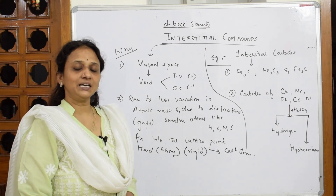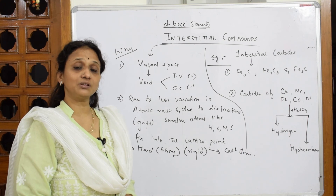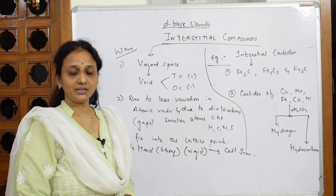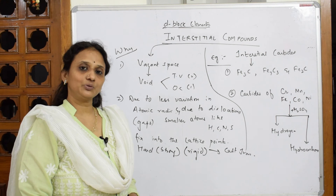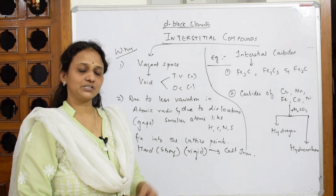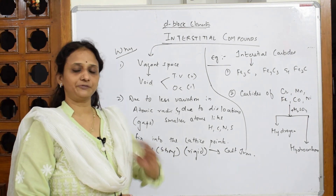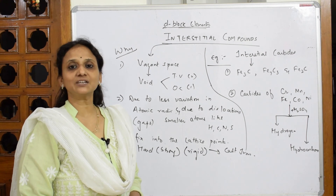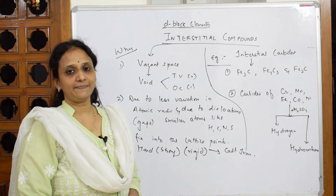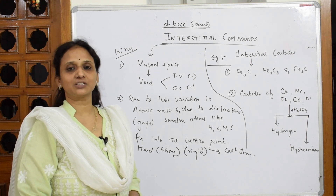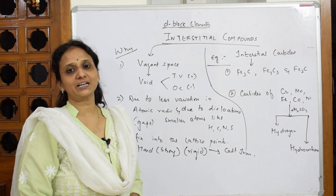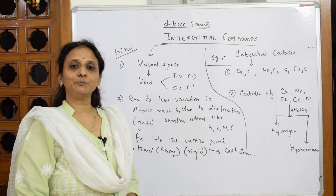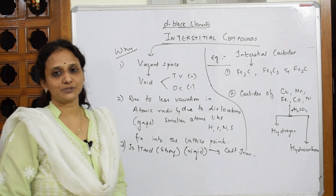I will now be moving into compounds of D-block: potassium permanganate (KMnO₄) and potassium dichromate (K₂Cr₂O₇). Before doing that, I will be starting with lanthanides and actinides, then finish off with potassium permanganate and potassium dichromate, and then we will be completing your board papers before starting a new chapter.